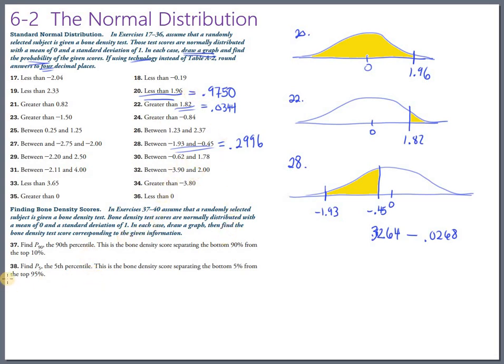Let's skip down to 38. 38. I know this video is getting long. So this will be the last one. 38 says find the P5, the 5th percentile. This is the bone density score separating the bottom 5% from the top 95%. So let's draw that picture.